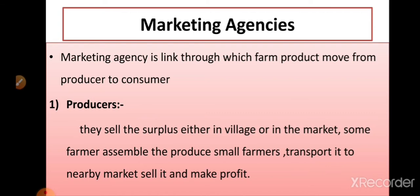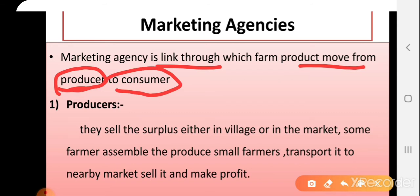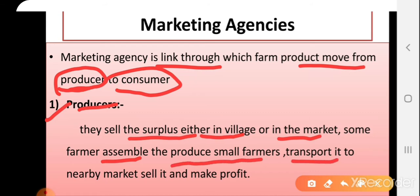Marketing agencies is a link through which products move from producer to consumers — from point of production to point of consumption. The first marketing agencies are producers. These producers sell their surplus or marketable surplus either in the village or in the marketplace. Some farmers assemble produce from small farmers, transport it to a nearby market, and sell it for profit, thus also acting as a marketing functionary by bringing goods to nearby APMCs.